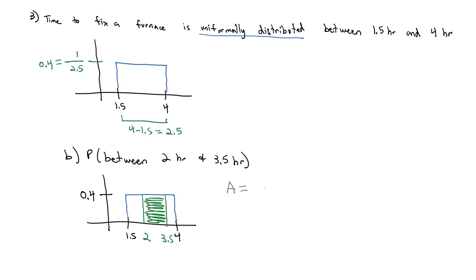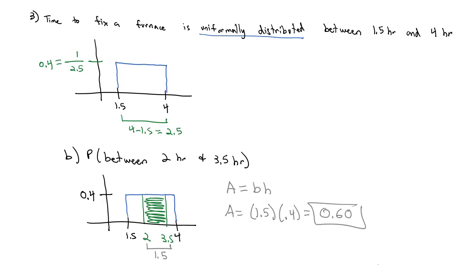I just need to find the area of that rectangle. Area is base times height. The base going from 2 to 3.5 — subtracting 3.5 minus 2 — gives a base of 1.5. So area equals the base of 1.5 times the height of 0.4, which equals 0.60. The probability that the furnace is fixed between 2 and 3.5 hours is about 60%. The uniform distribution has the same height, it's a rectangle, and area equals probability.